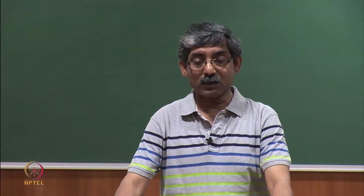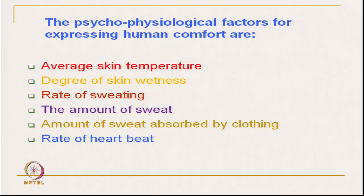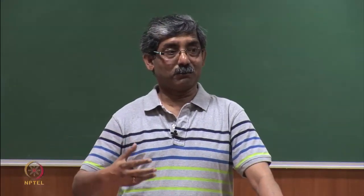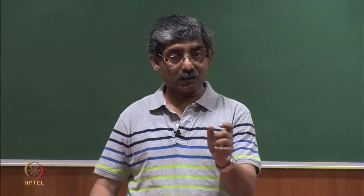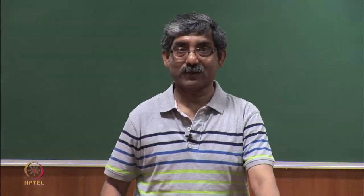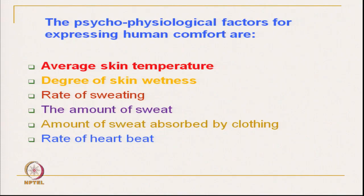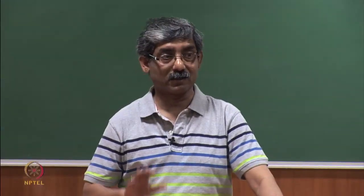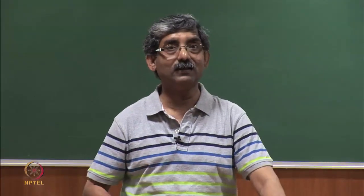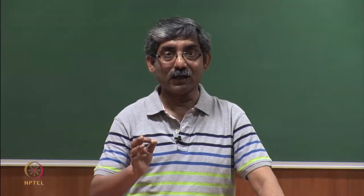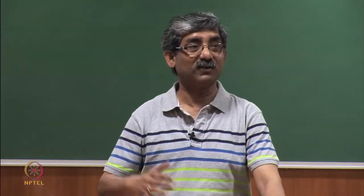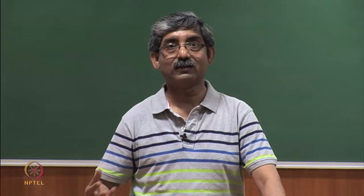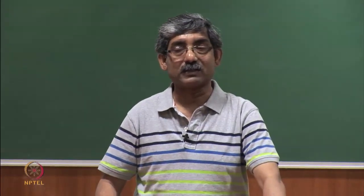The psychophysiological factors for expressing human clothing comfort are related to average skin temperature. If the average skin temperature is high after wearing cloth, the person will become warm, so we have to control the average skin temperature. Next is degree of skin wetness — to keep our core body temperature constant, our body physiology keeps releasing sweat, and our clothing has to act to maintain dry skin. If the skin is wet, we will feel uncomfortable due to wetness — that is also a psychophysiological factor.